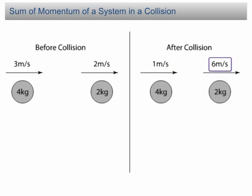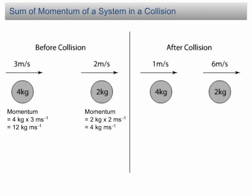Let's calculate the momentum of the balls before and after the collision. Before the collision, the momentum of the 4 kg ball is 4 kg × 3 m/s = 12 kg·m/s. Using the same equation, the momentum of the 2 kg ball is 4 kg·m/s. The sum of momentum before collision is 12 + 4 = 16 kg·m/s.